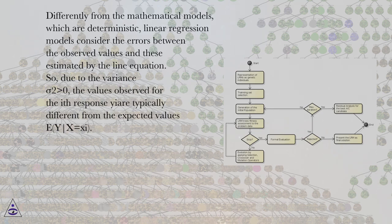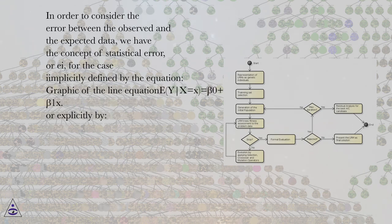So, due to the variance sigma squared greater than 0, the values observed for the ith response Yi are typically different from the expected values E[Y|X=xi]. In order to consider the error between the observed and the expected data, we have the concept of statistical error, or εi, for the case implicitly defined by the equation.